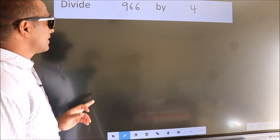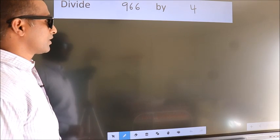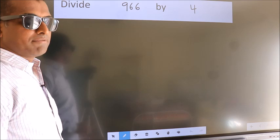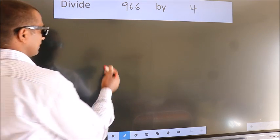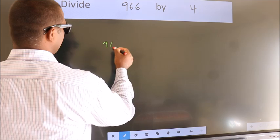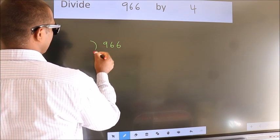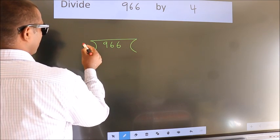Divide 966 by 4. To do this division, we should frame it in this way. 966 here, 4 here.